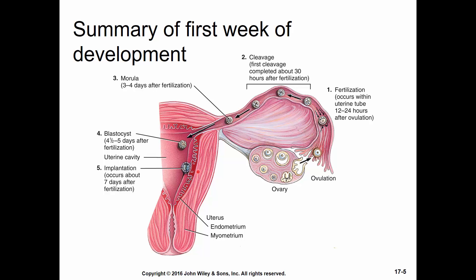When the embryo implants, there can be a little bit of bleeding. About the time women are expecting their menstrual period is about when implantation is occurring. She might think she's having a light period when actually she's having implantation bleeding. This can cause some women to be a little confused about exactly when they became pregnant.